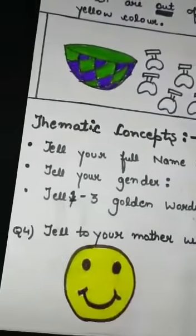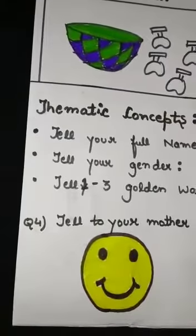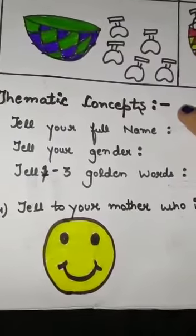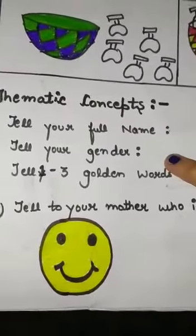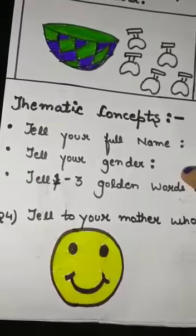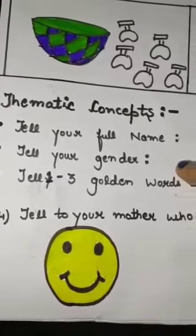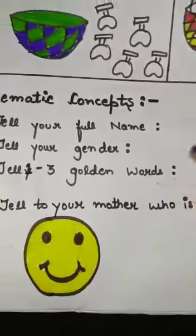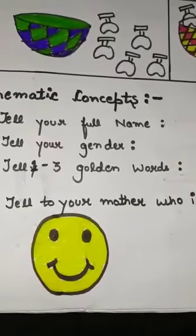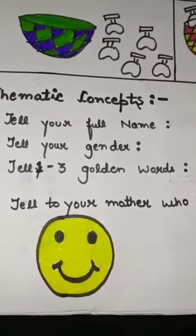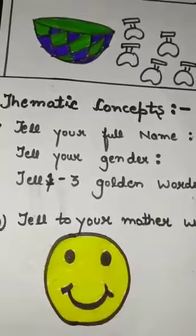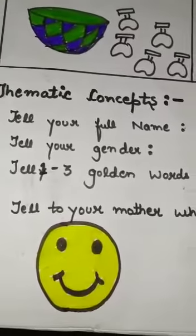The mathematical and spatial concept ends here. Now we have the second concept, which is thematic concept. Generally it is an oral concept, so your mother or father will ask you these questions and you have to answer them. You have to tell your full name, then tell your gender — whether you are a girl or a boy — and then two or three golden words. Maximum three golden words.